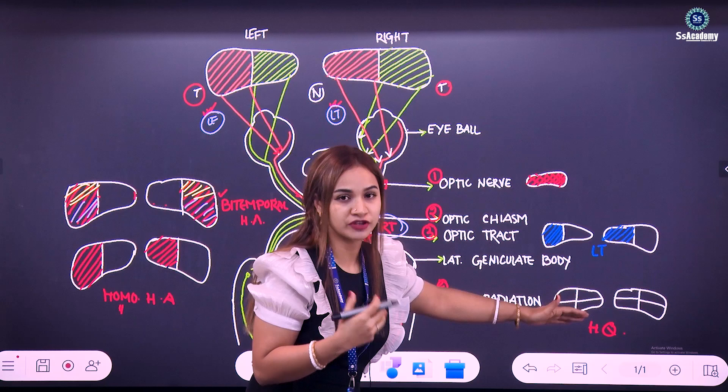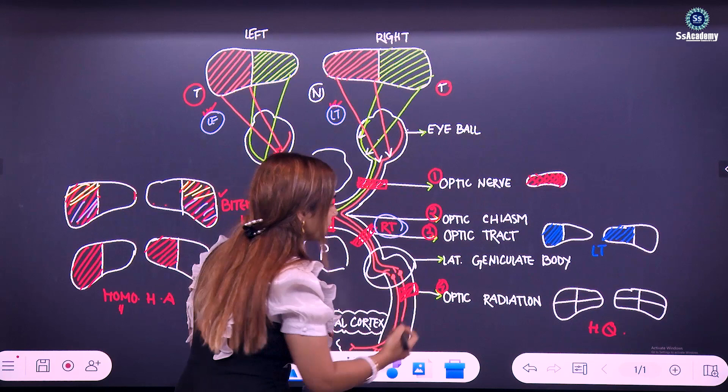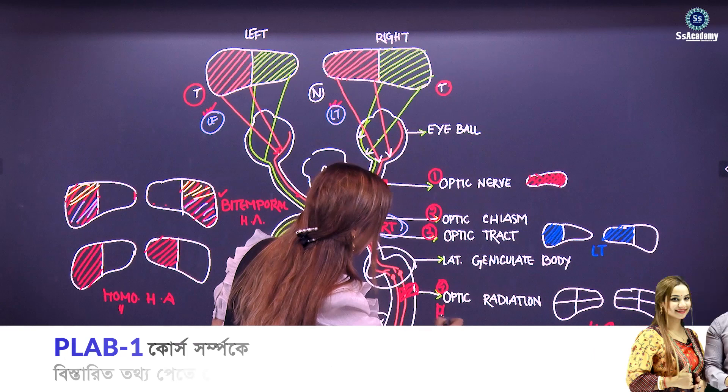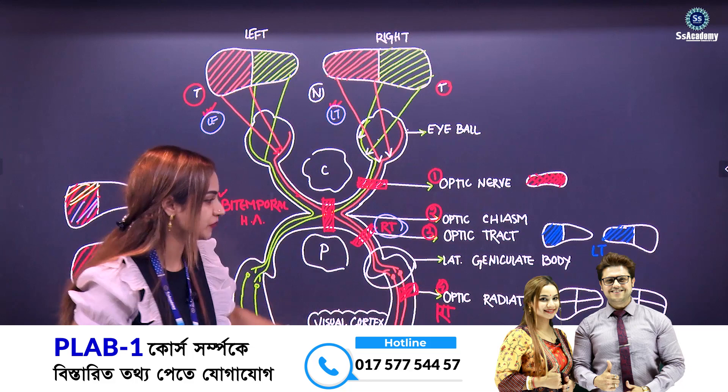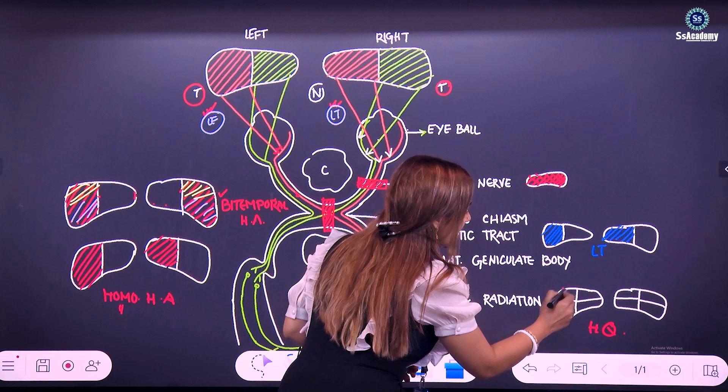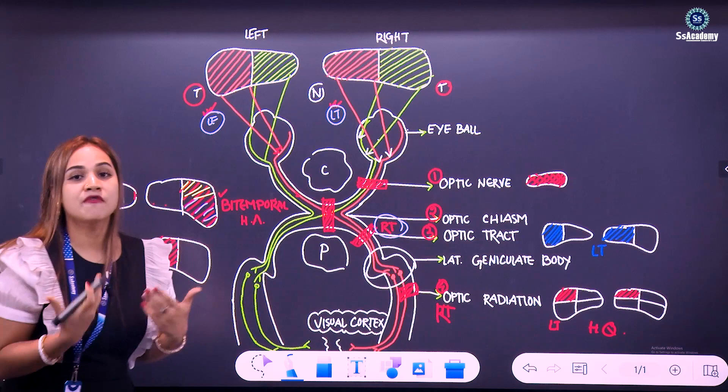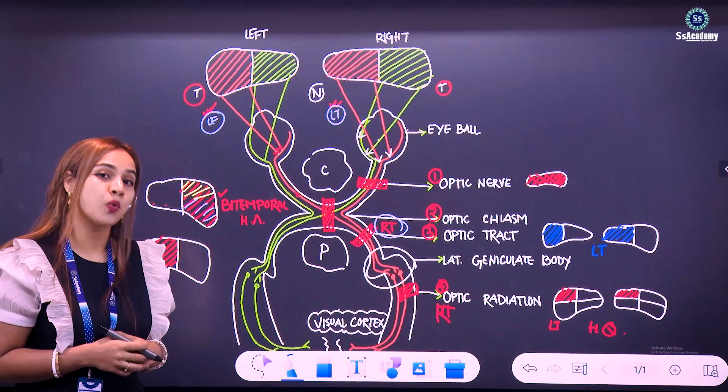Similarly, like the optic tract, if the lesion is on the right side of the optic radiation, the defect will be on the opposite side — that means left-sided homonymous quadrantanopia. One-fourth of the vision will be lost. That is called homonymous quadrantanopia.